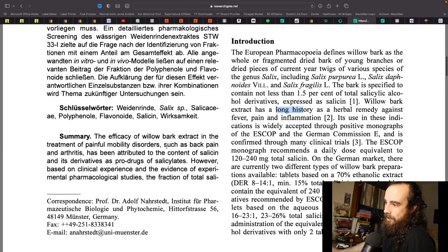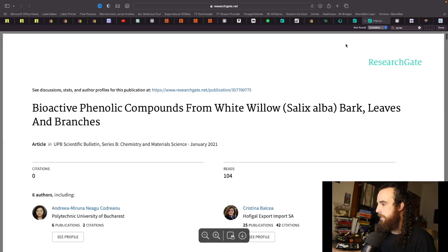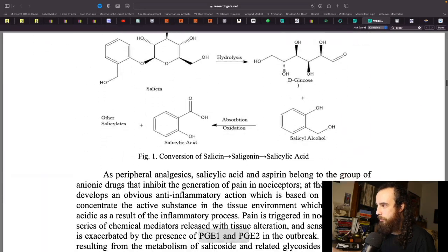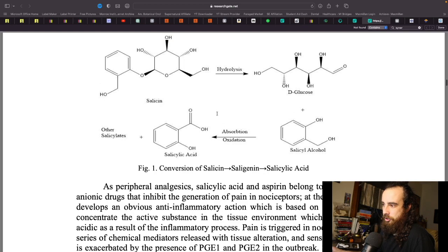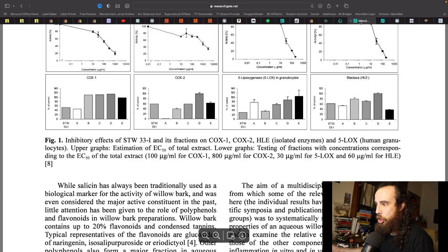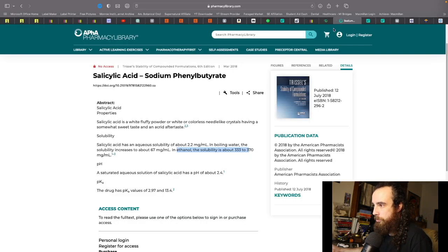Specifically with willow bark, we found that the efficacy of the extract in the treatment of pain has been attributed modernly to the content of salicin and its derivatives, meaning the salicylic acid mostly, and pro drugs. Pro drug is basically a term that means if this hydrogen was removed here and then a counterbalanced charge like a sodium ion came in and was ionically bound to that oxygen, that would be considered a pro drug.